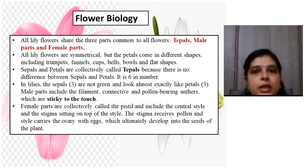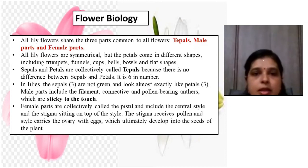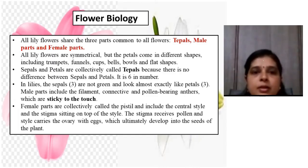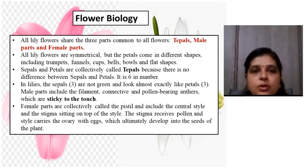Regarding flower biology of lilium: the flower is divided into tepals, the male part, and the female part. A tepal is the collective name for sepals and petals because there is no color difference between them in lilium. There are three sepals and three petals, giving six tepals total. The female part (pistil) includes the central style and stigma. The male part includes the filament and connective. The pollen of lilium is sticky and can stain clothes.